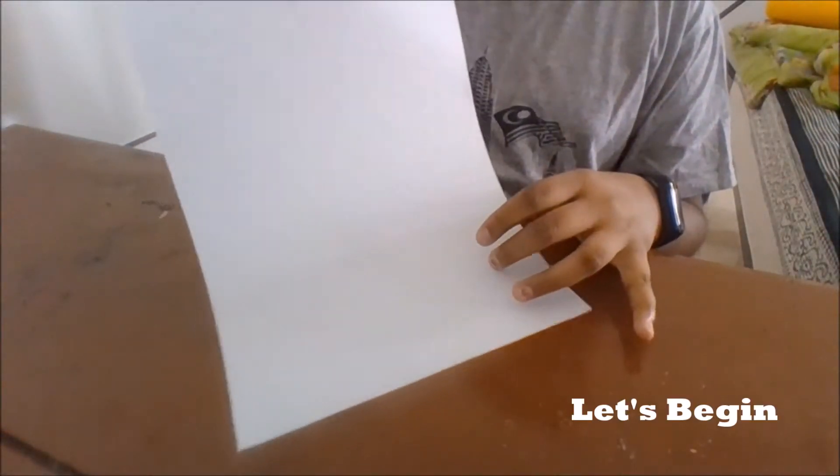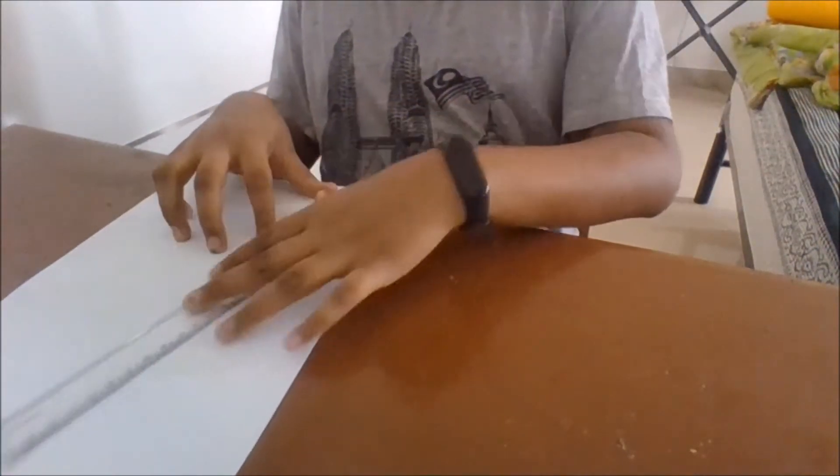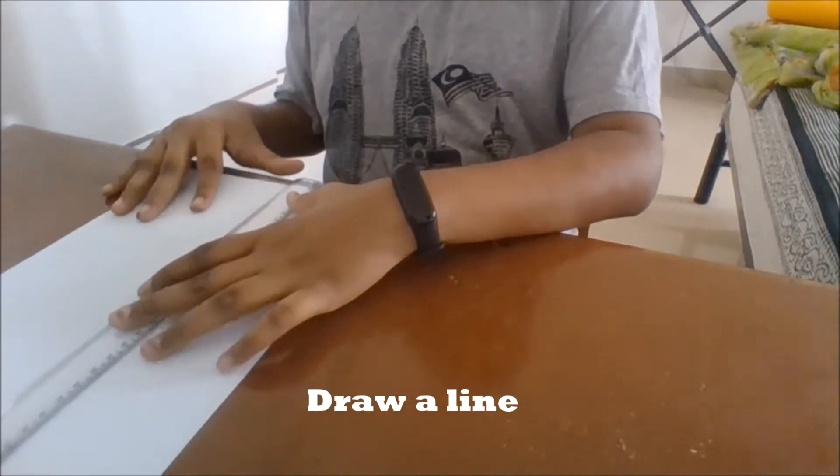Now let's begin. First you want to take your sheet of paper and draw a line according to the height of your pot.